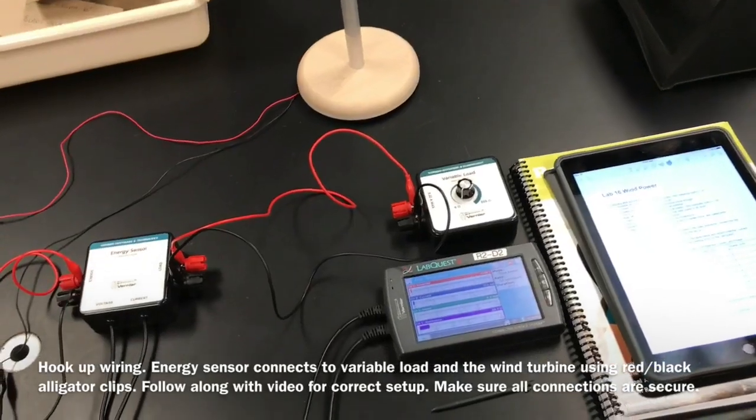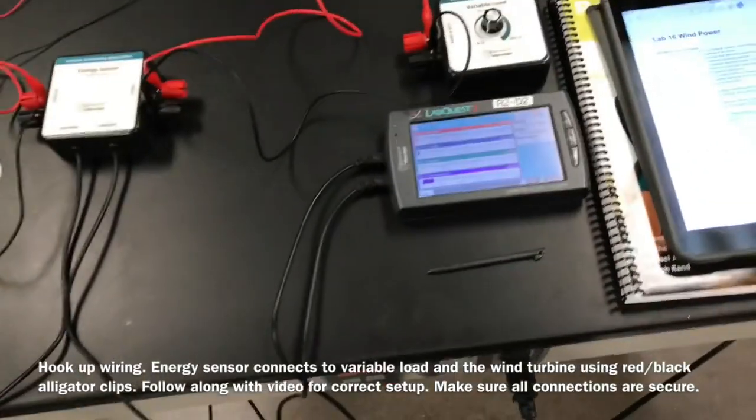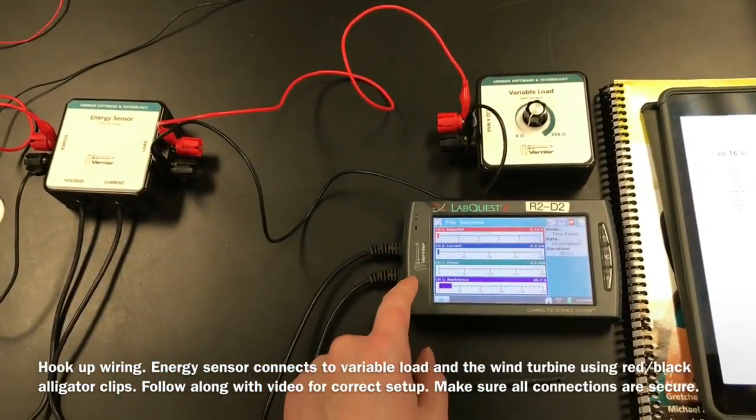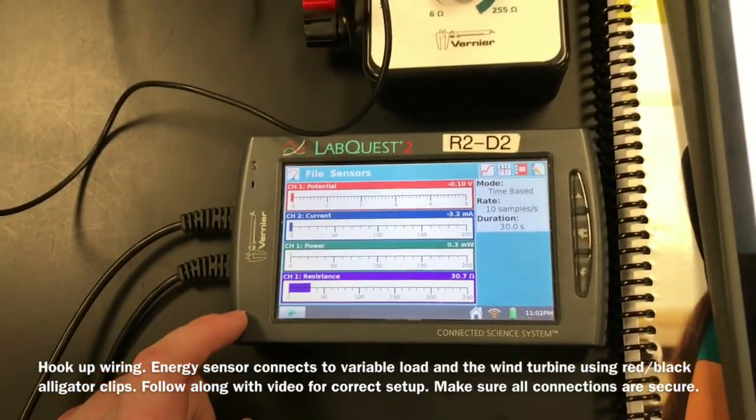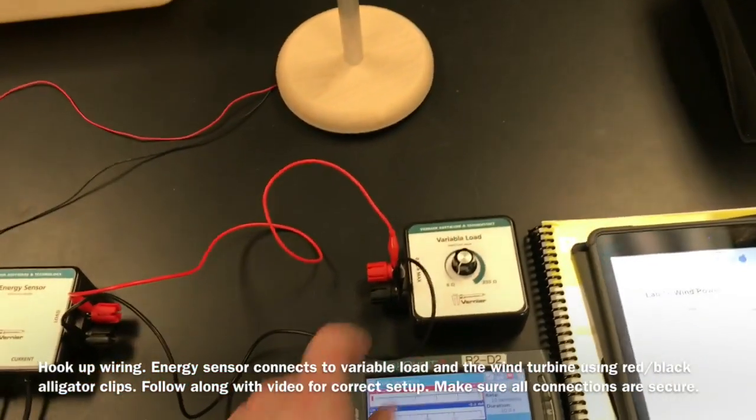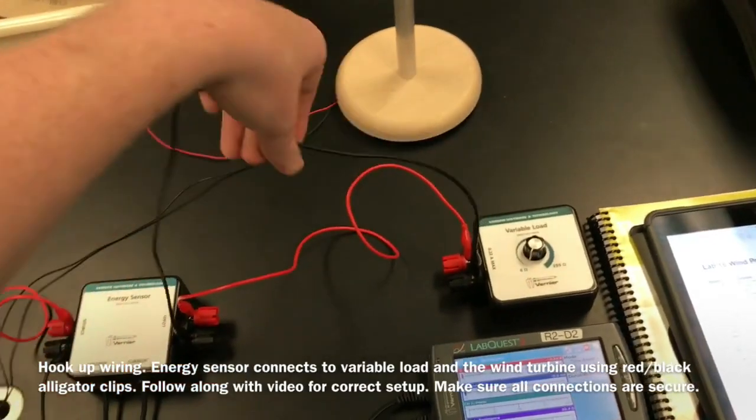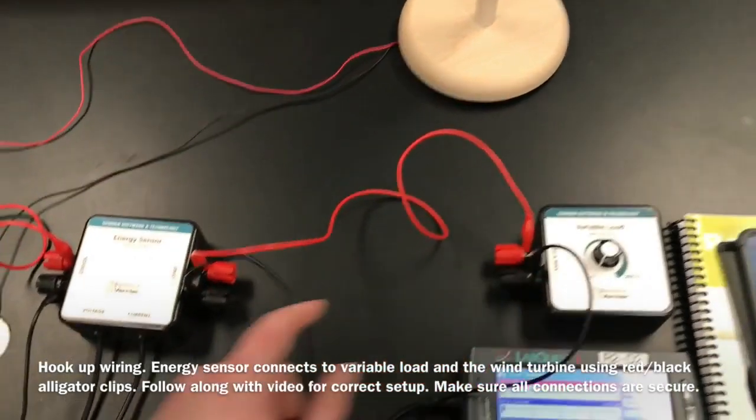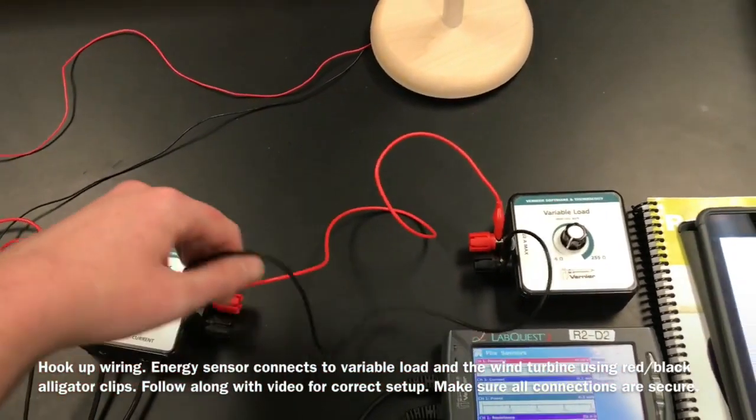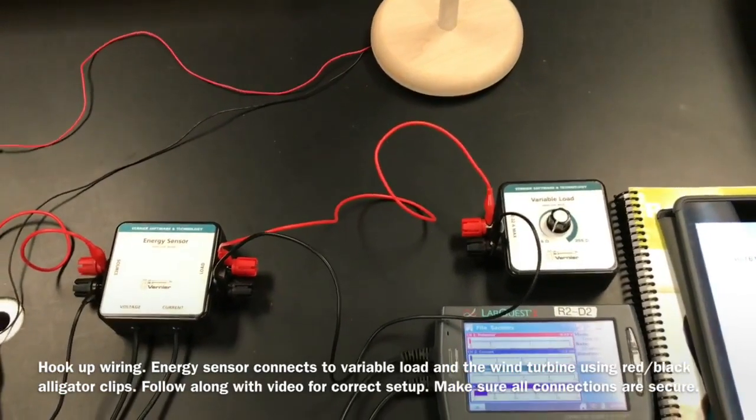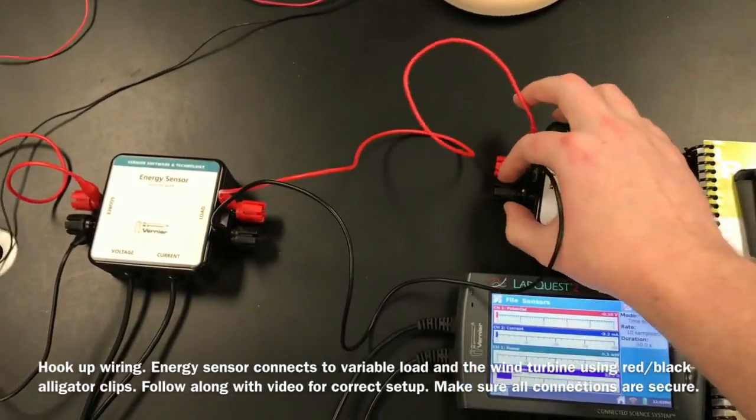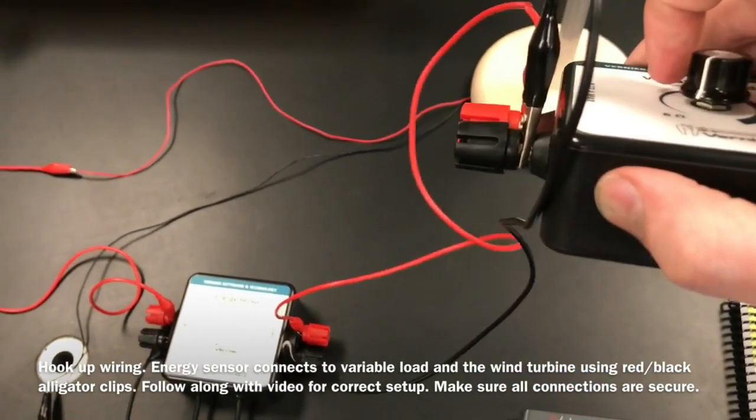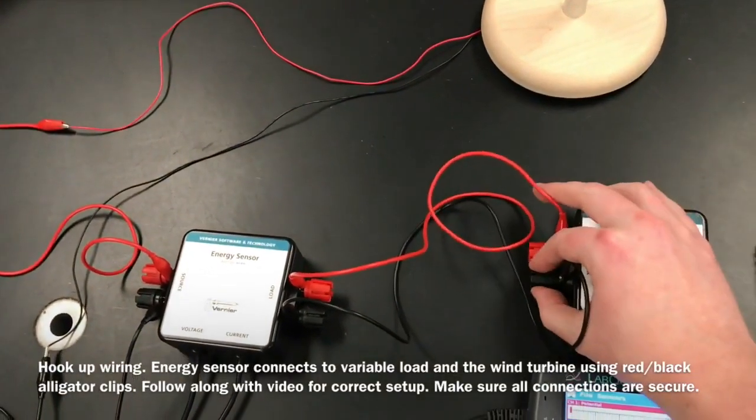So for this lab, I already have everything hooked up that you're going to need to hook up. So let's follow along. I've got my energy sensor hooked up to my LabQuest, so there should be two plugins for your energy sensor. Should be getting a reading something like that initially. And then you're going to want to grab a couple sets of alligator clips. And so I hooked up my energy sensor to my variable load using a black and a red alligator clip. Make sure to plug it in black to black, red to red. And make sure these are nice and tight once you've actually plugged this in. So you're going to plug metal on metal and make sure it's in there nice and snug.